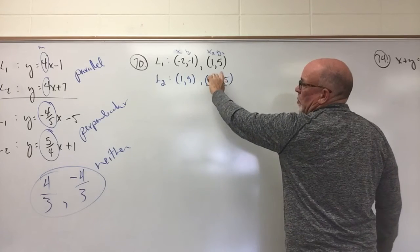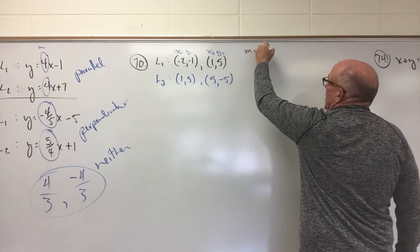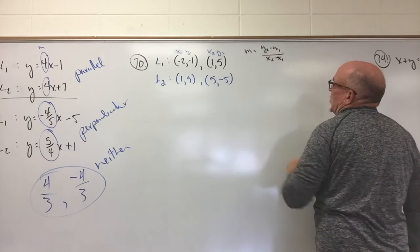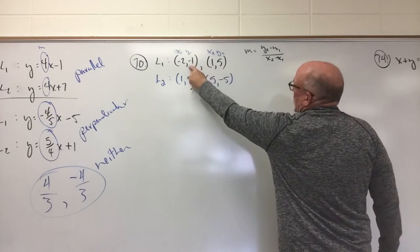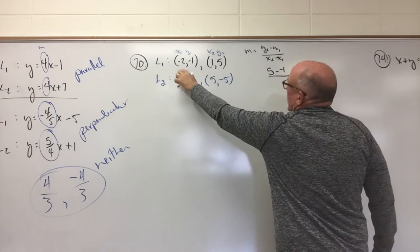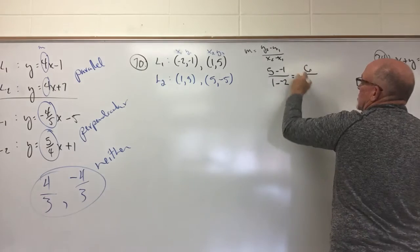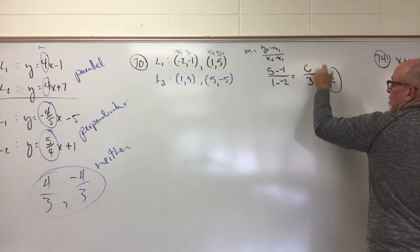All right. So, for the first one, remember slope. Slope is change in y over change in x. Please do not put the x's on top. So, slope is going to be 5 minus a negative 1 over 1 minus a negative 2. So, I get 6 on top and 3 on bottom, which is 2 or 2 over an understood 1.